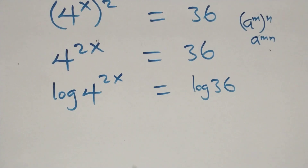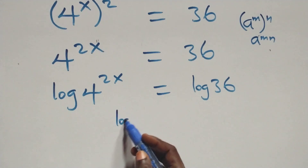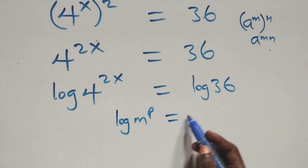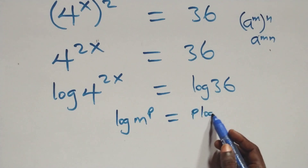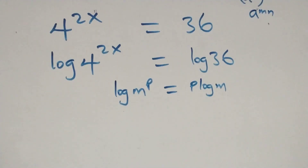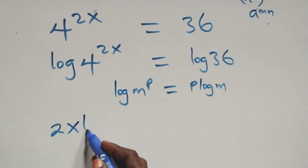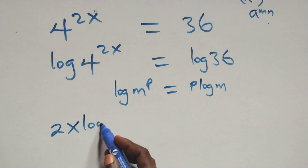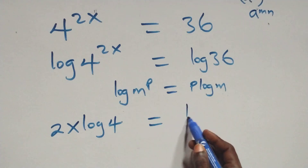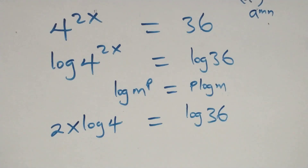Then, the next step here, we apply the power rule of logarithms: log m raised to power p is the same thing as p times log m. So all we have here becomes 2x times log 4 equals log 36 on this side.